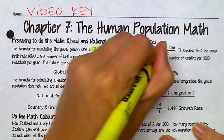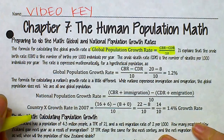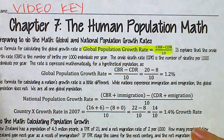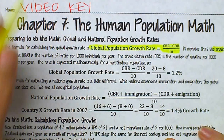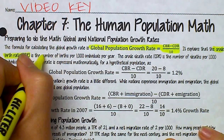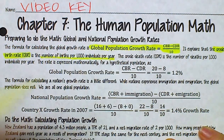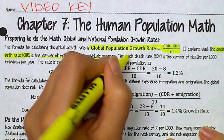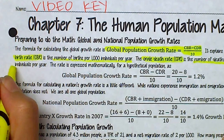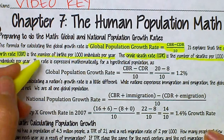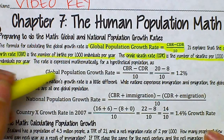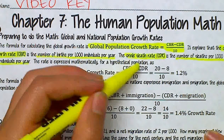CBR stands for crude birth rate, which is the number of births per 1,000 individuals per year — underline that definition. The crude death rate, CDR, is the number of deaths per 1,000 individuals per year. This rate is expressed mathematically as: global population growth rate equals CBR minus CDR over 10.